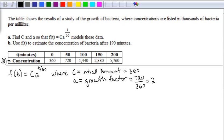That makes sense, because if I multiply each one of these, the first one by 2, I get 720. The next one by 2, I get 1440. Multiply 1440 by 2, I get 2880, and so forth. So it does make sense that the growth factor is 2.